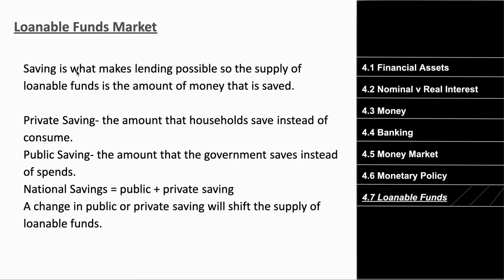Our last topic is loanable funds — basically the savings and borrowing of loanable money. There are different types of savings: private savings is the amount households save instead of consume; public savings is what the government saves instead of spends; and national savings is the overall total — public plus private.